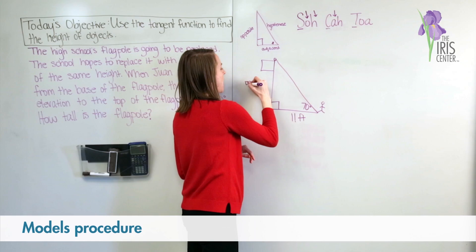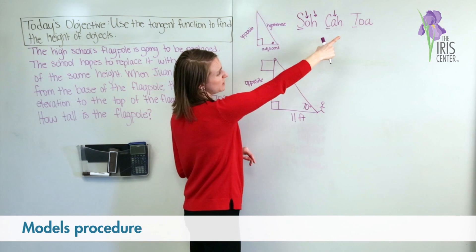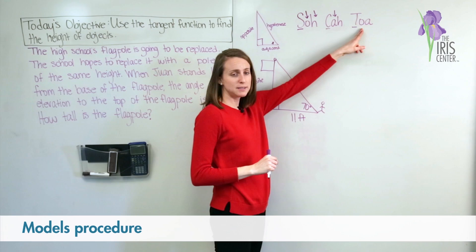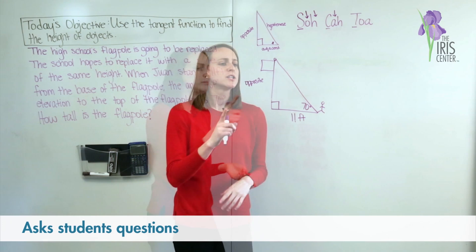And for this, I know I want to figure out the side opposite to the 70 degree angle. Looking back, I notice that tangent is the ratio between the side opposite and the side adjacent to my target angle, so that's what I'm going to use.